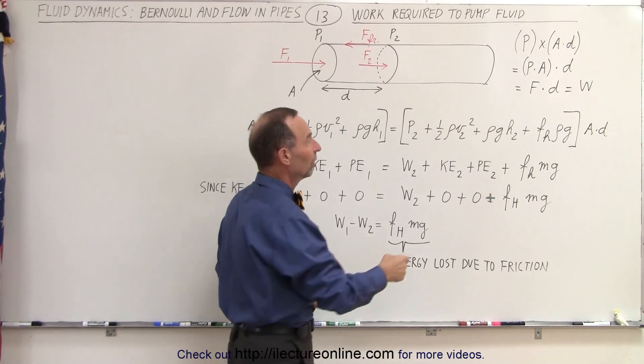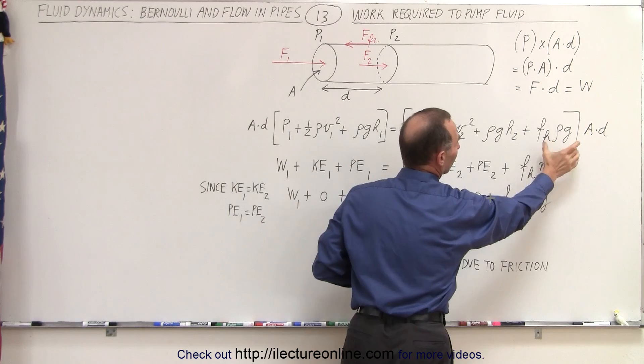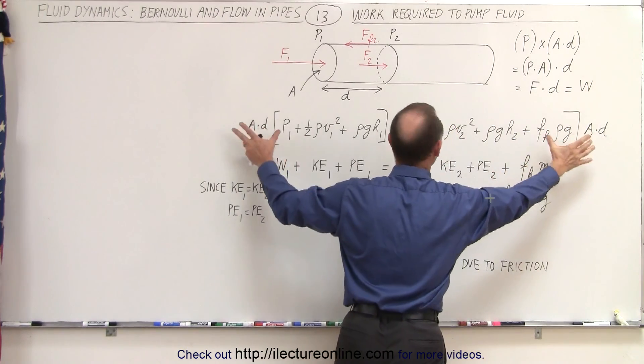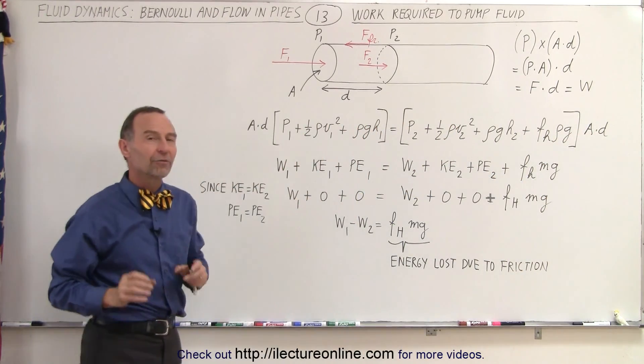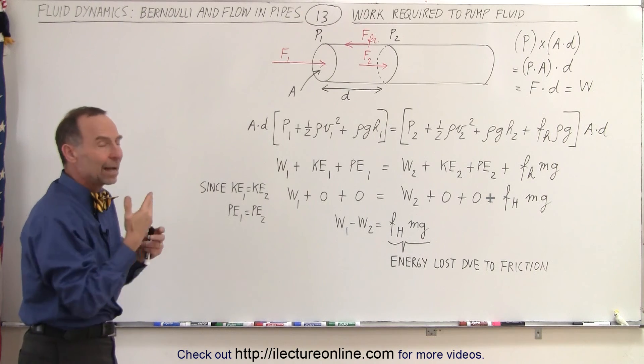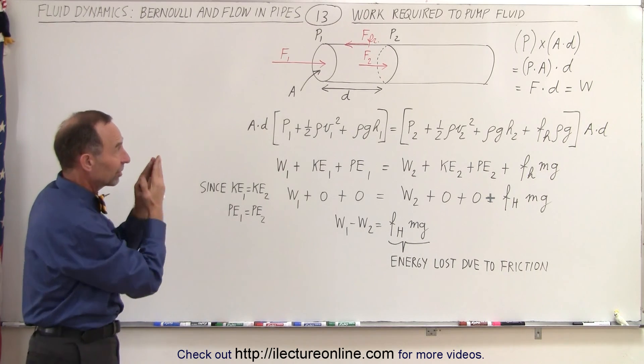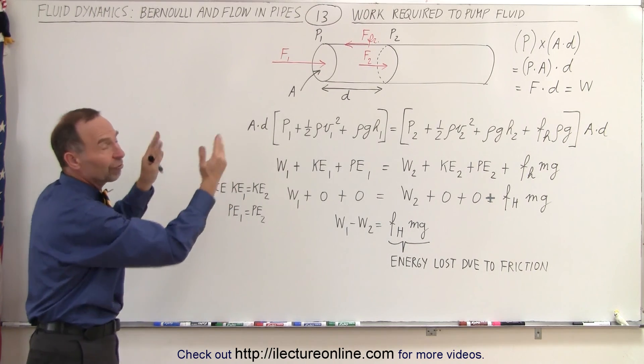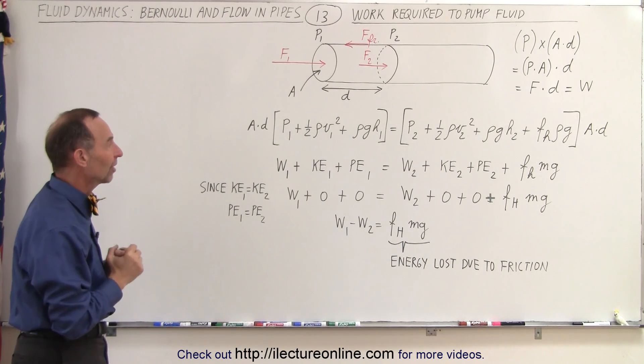So we have the frictional head loss term added and now we're multiplying both sides of the equation by A times d. The cross-section area times the distance which is equal to the volume of that section of fluid inside the pipe.